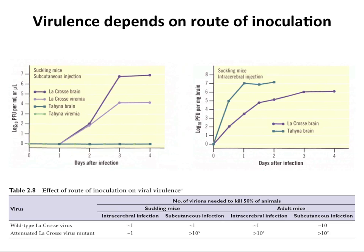Here's an example showing how route of inoculation influences virulence. Suckling mice were inoculated with bunyaviruses — Lacrosse and Tanya — either subcutaneously or intracerebrally. Subcutaneous injection: Lacrosse replicates quite well, whereas Tanya doesn't replicate at all. But intracerebrally, both viruses can replicate. So the route of inoculation makes a big difference.